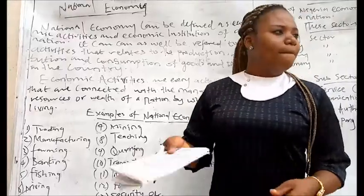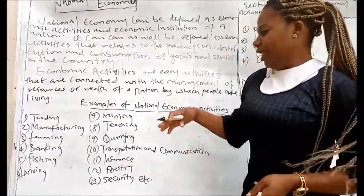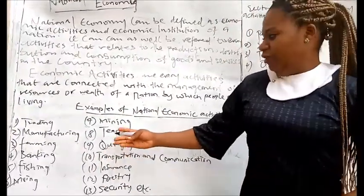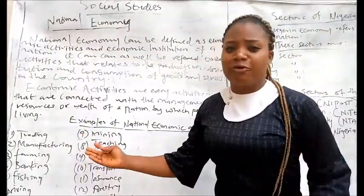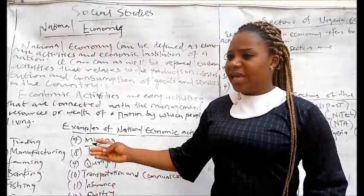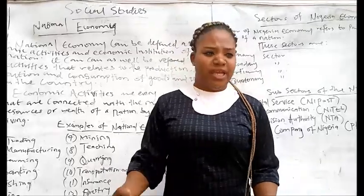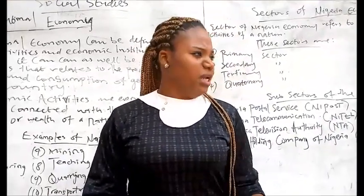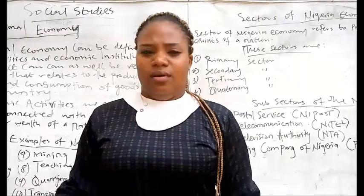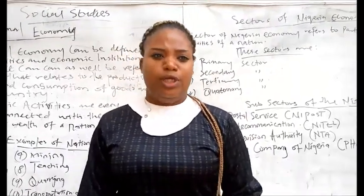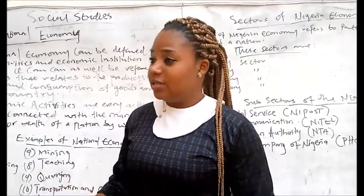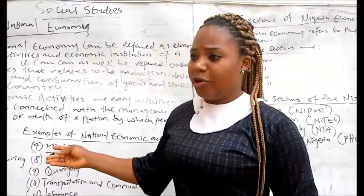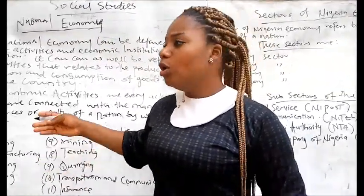We all know what banking is. Likewise, farming — if you don't call it farming, you can also call it agriculture. That is where we get the food we eat, like cassava, rice, yam, cocoa yam, etc. These are what we get from agriculture or farming.